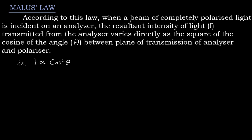Malus's Law: According to this law, when a beam of completely polarized light is incident on an analyzer, the resultant intensity of light I transmitted from the analyzer varies directly as the square of the cosine of the angle theta between the plane of transmission of the analyzer and polarizer.